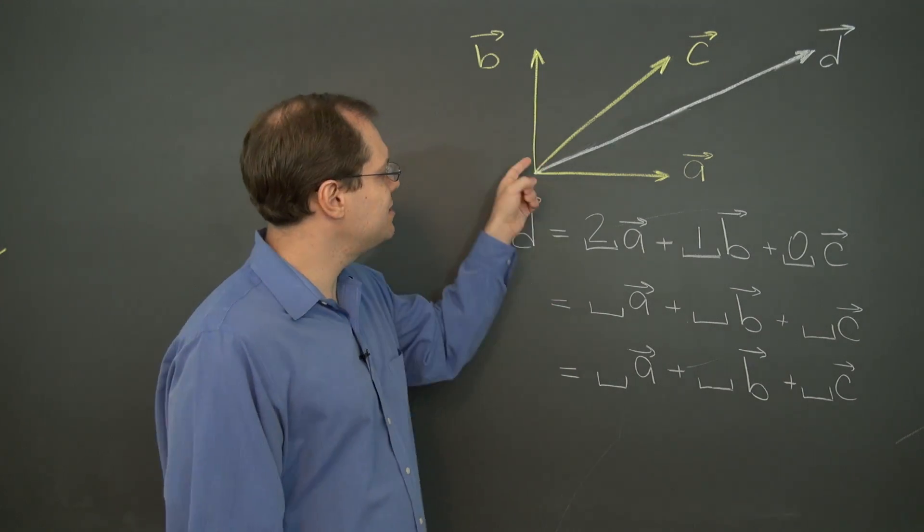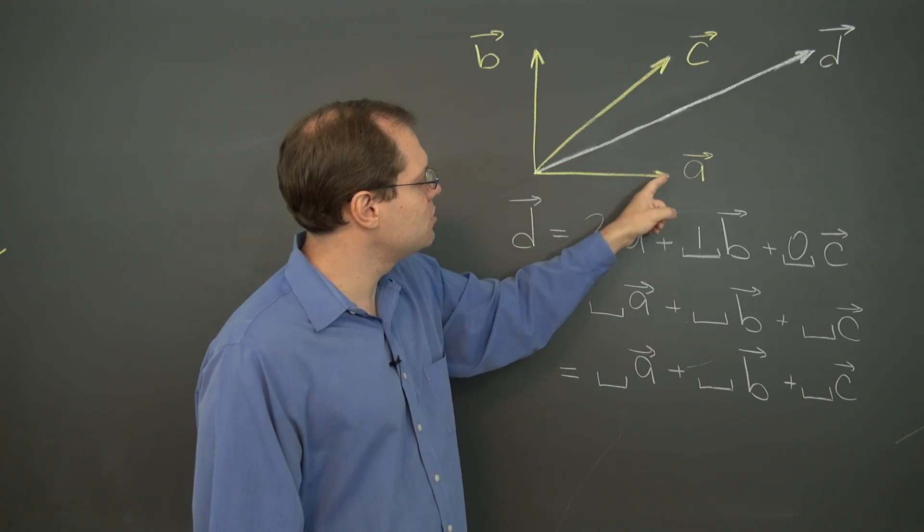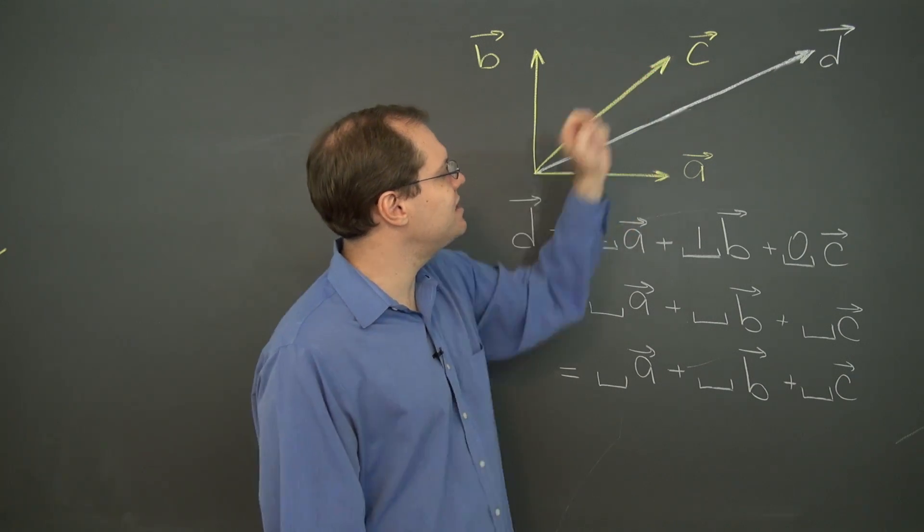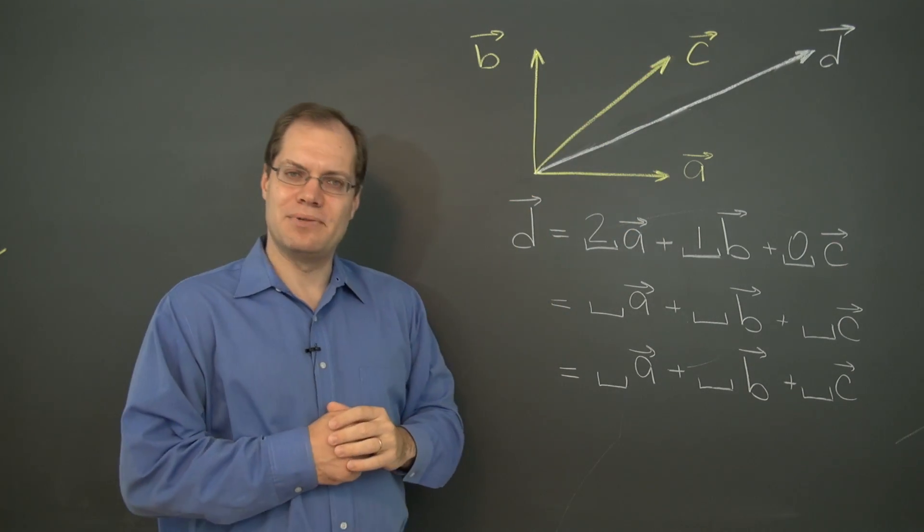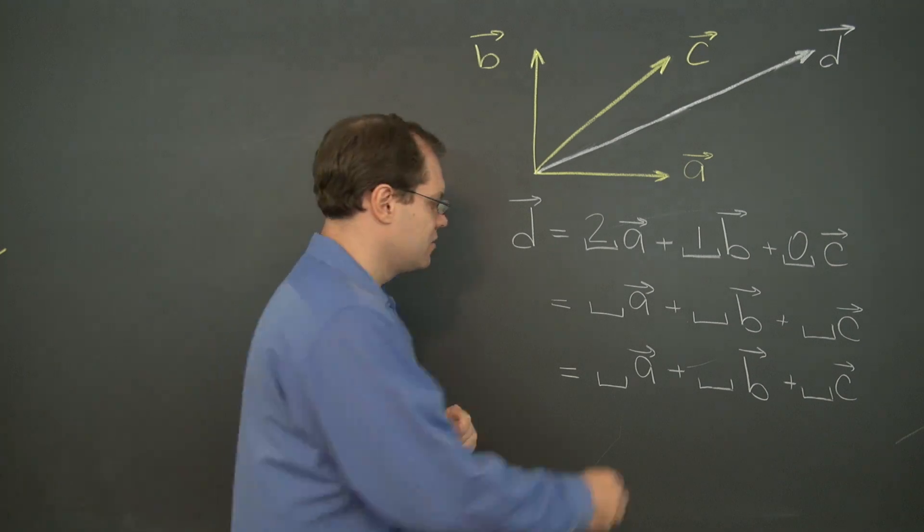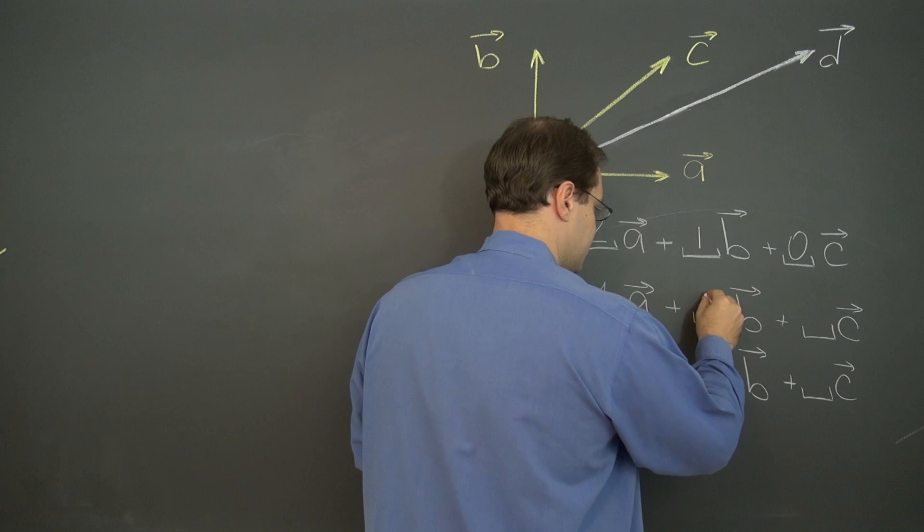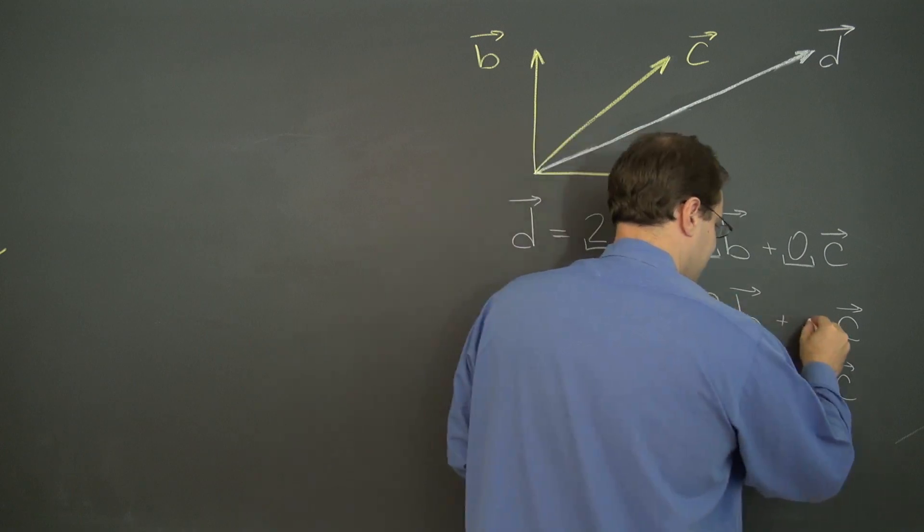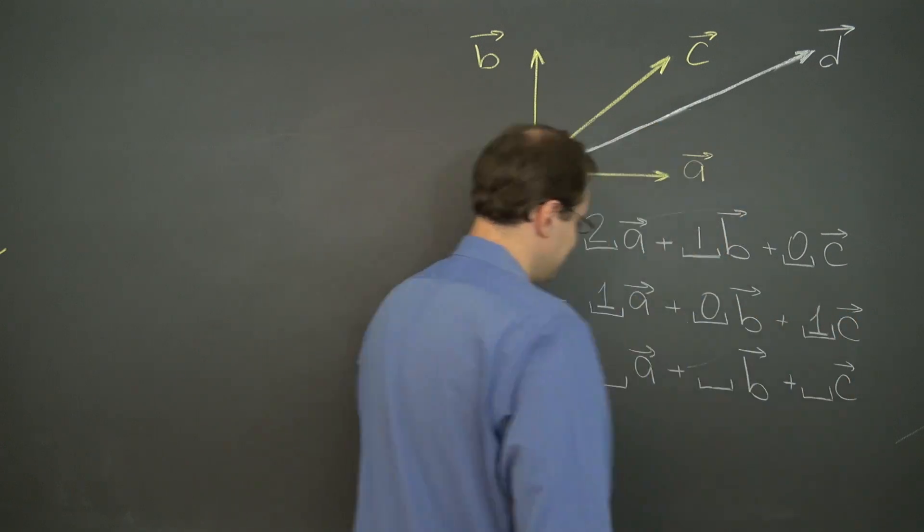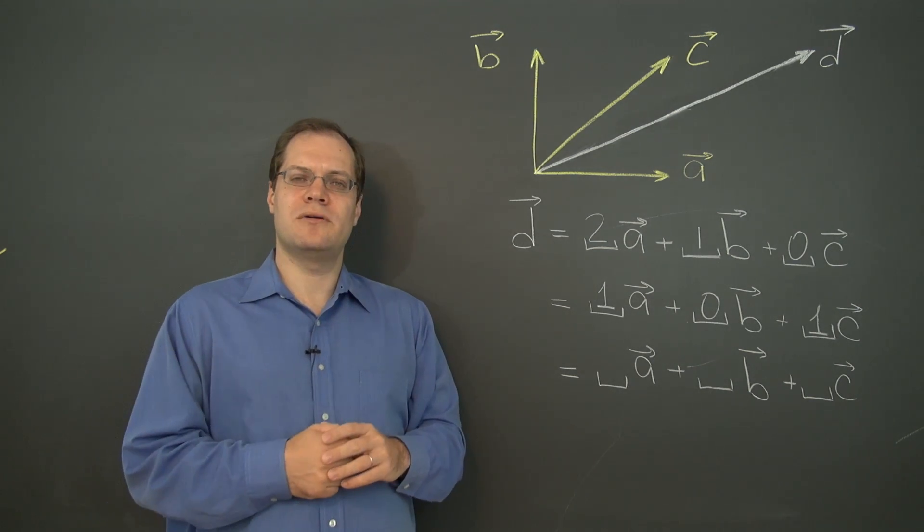And another one you can see from the parallelogram rule involving a and b—excuse me, a and c—it's just a plus c and none of b. So 1 of a, 0 of b, and 1c, a plus c. Can you see one more?